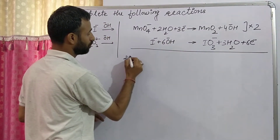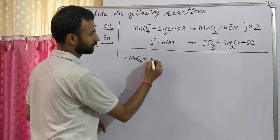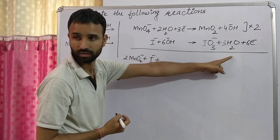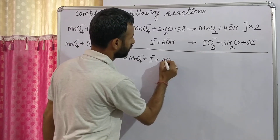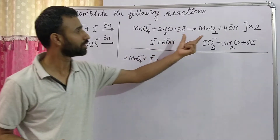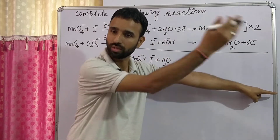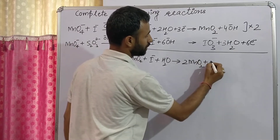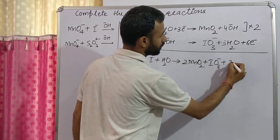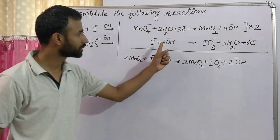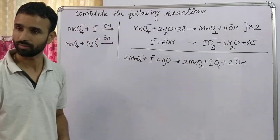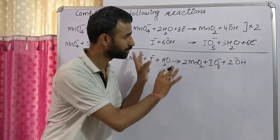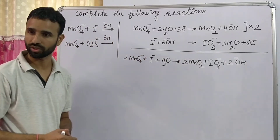On adding, we get two MnO₄⁻ plus I⁻. On this side there are four H₂O and on the other side three, so we have one H₂O remaining. The OH⁻ should be on the right side. So we get two MnO₂ plus IO₃⁻ plus two OH⁻. Checking: six OH⁻, eight OH⁻, giving three MnO₂. Total charge on this side is minus three, and minus three on the other — verified. This is the balanced equation.